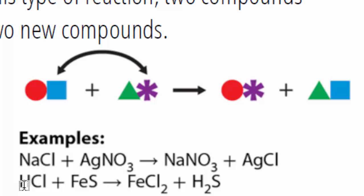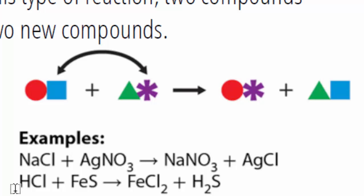Another example: HCl — H is positive, Cl is negative — reacts with iron(II) sulfide. Iron is plus 2, sulfur is minus 2. On the product side, iron (plus 2) needs 2 chlorines to balance, and 2 hydrogens are needed to balance the negative 2 of the sulfur. Notice this reaction is not balanced — to balance it, put a 2 in front of the HCl. This is an example of a double displacement reaction.